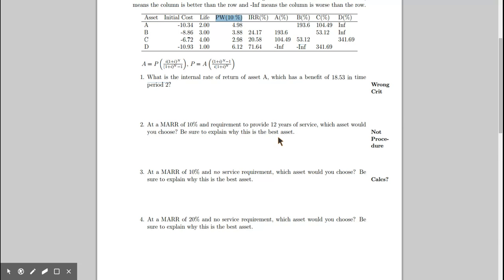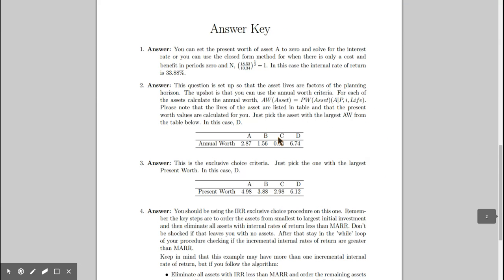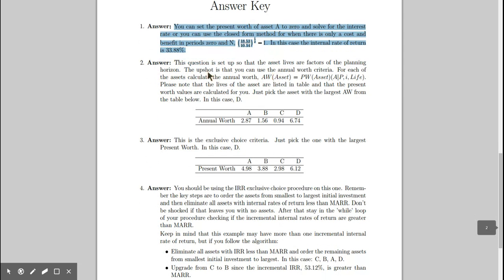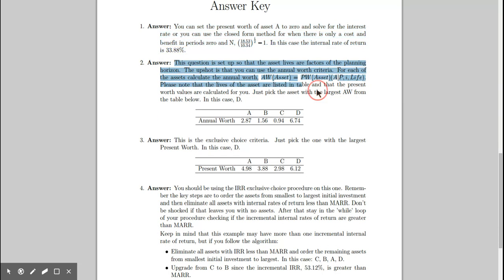When you get these back, there will be a key listed up there and shows you, again, calculation details on how to calculate the internal rate of return for the asset. It also shows you calculation details, how to get to annual worth, how to use the annual worth criteria and have these numbers listed.